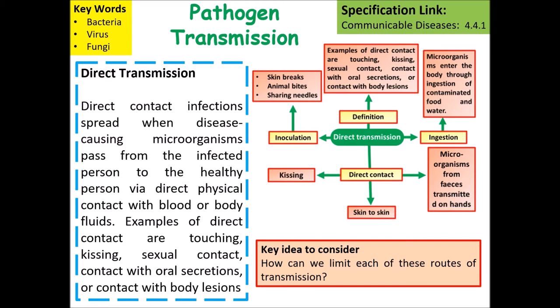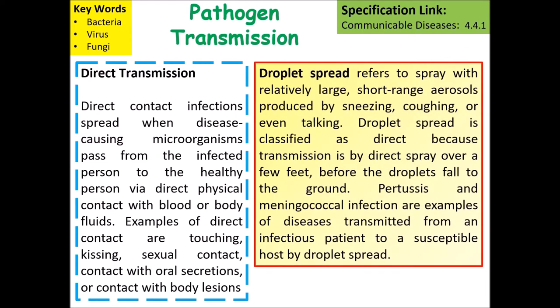One method of direct transmission is droplet spread. This refers to the spread of relatively large, short-range aerosols produced by sneezing, coughing or talking. Droplet spread is classified as direct because transmission occurs by direct spray over a few feet before the droplets fall. The host can pick up droplets on their hands and transfer the pathogen by touching places on their face.